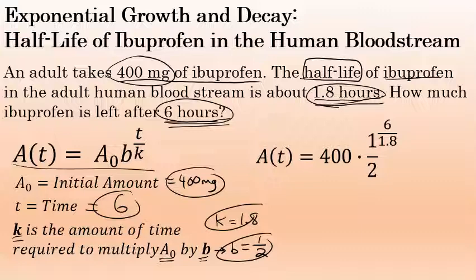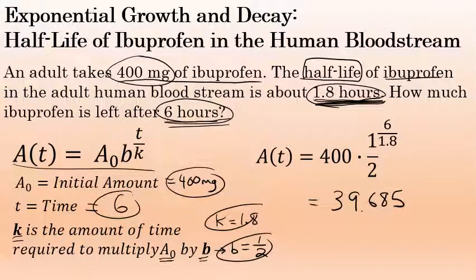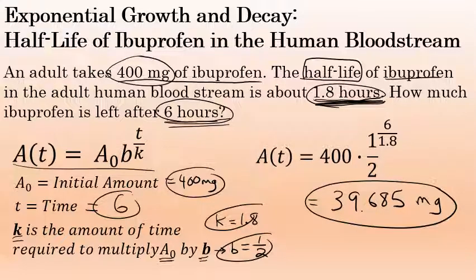This expression tells you how many milligrams of ibuprofen will be left in the adult's bloodstream after six hours, assuming a half-life of exactly 1.8 hours. We raise one half to the power of 6 over 1.8, which is approximately 0.09921 to five decimal places, then multiply by 400. This gives a value of approximately 39.685 milligrams remaining in the bloodstream after six hours.